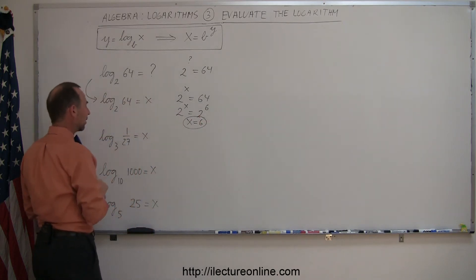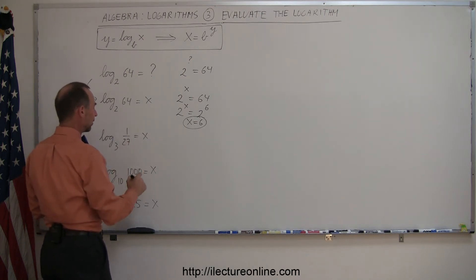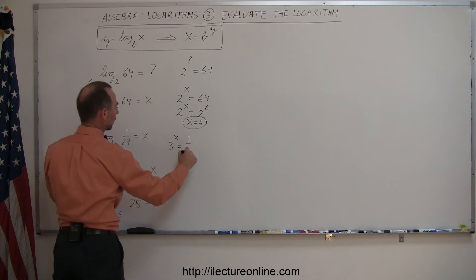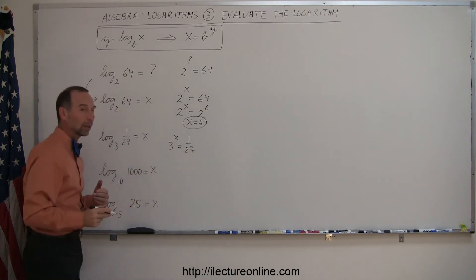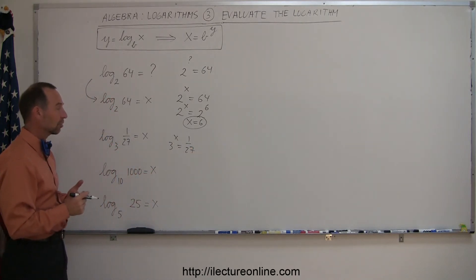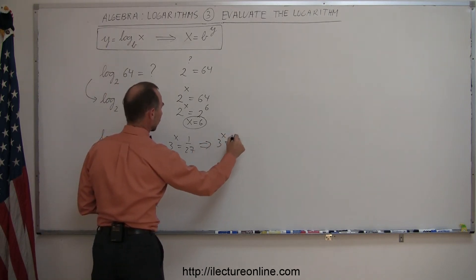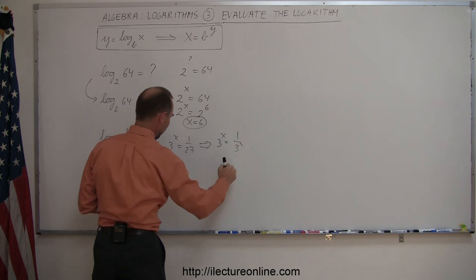Okay, here again as an example we're looking for the value x and we know that the base 3 to the x power is equal to 1 over 27. And so we know that 27 is the same as 3 to the third power. So we can say that 3 to the x power is equal to 1 over 3 to the third power.